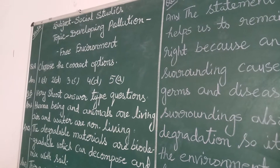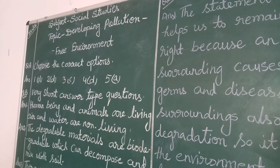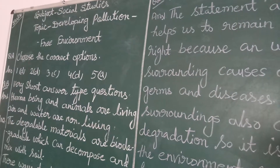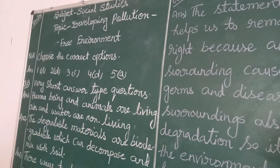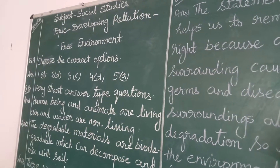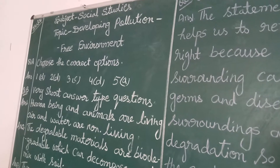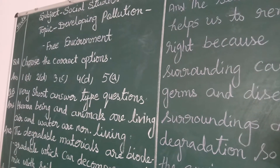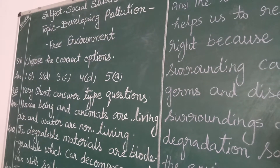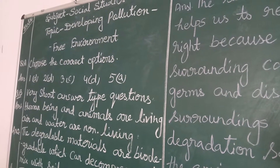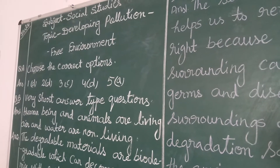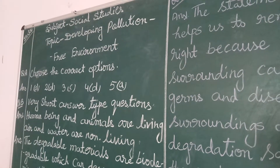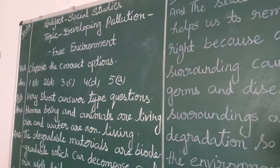Question number 5. The process in which waste materials are treated in a way that they can be used again — the answer is A: recycling. After that, question section B: very short answer type questions.